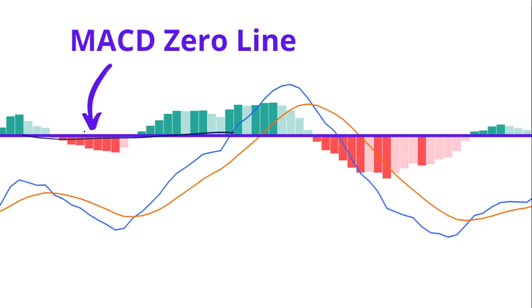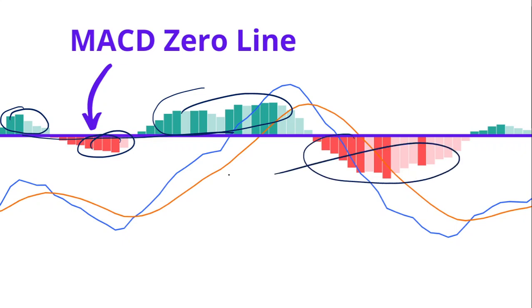Positive histogram bars are those above the zero line. These positive histogram bars above the zero line indicate the MACD line is above the signal line, showing an upward trend. Negative histogram bars are below the zero line, indicating the MACD line is below the signal line.